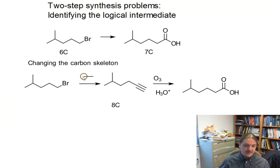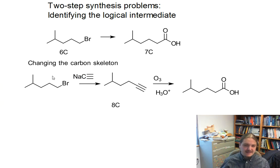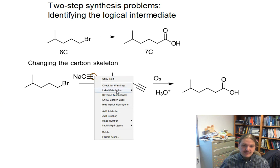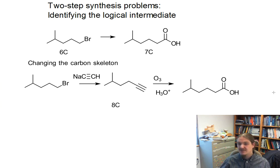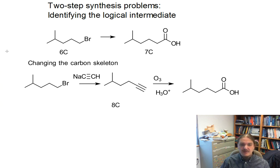There's a way to do that. Terminal alkynes — including acetylene, the simplest of all terminal alkynes — are acidic and can be deprotonated to make acetylide anions that are good nucleophiles for SN2-type reactions. We can react the alkyl halide with sodium acetylide, make the alkyne, then undergo ozonolysis to make the carboxylic acid. The key skill: if you can identify a logical intermediate, you can break a two-step problem down into two one-step problems.